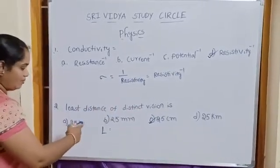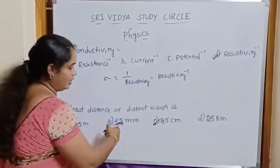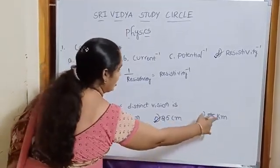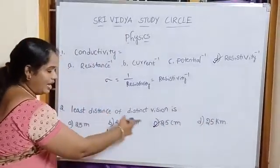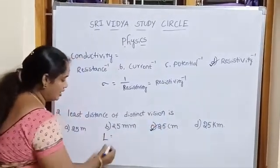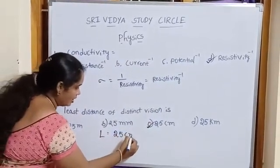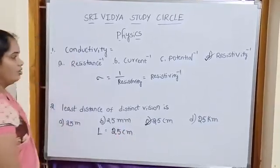Here given 25 meters, 25 millimeters, 25 centimeters and 25 kilometers. In eye, we have to measure centimeters. Then option is C, 25 centimeters.